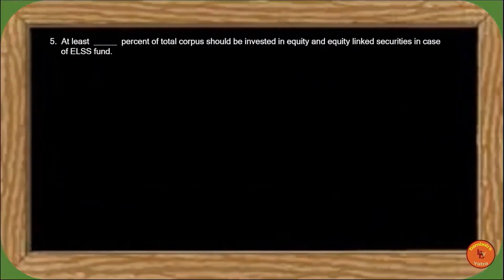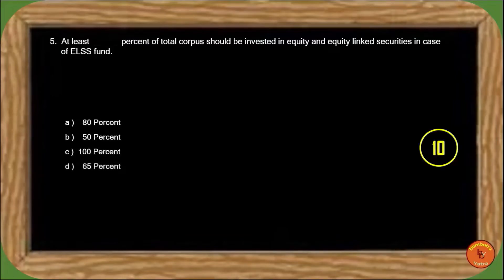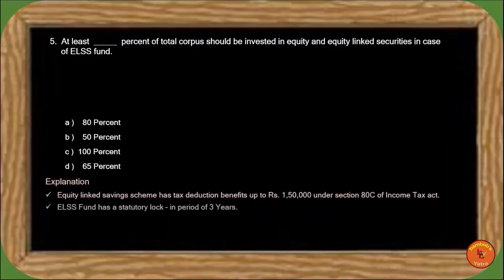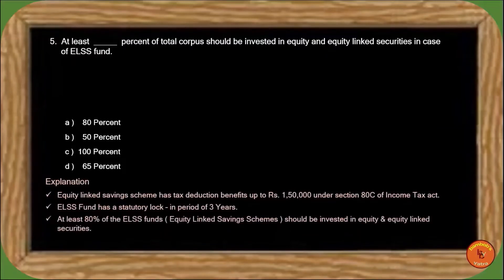Next question: At least 10% of total corpus should be invested in equity and equity-linked securities in case of ELSS funds — how much percent should be invested? ELSS funds provide tax deduction facilities under Section 80C of the Income Tax Act and have a 3-year lock-in period. At least 80% of ELSS funds should be invested in equity and equity-linked securities. So the correct answer is option A.